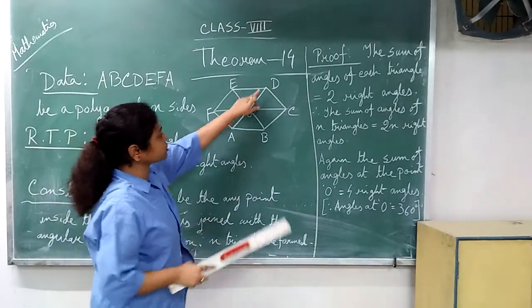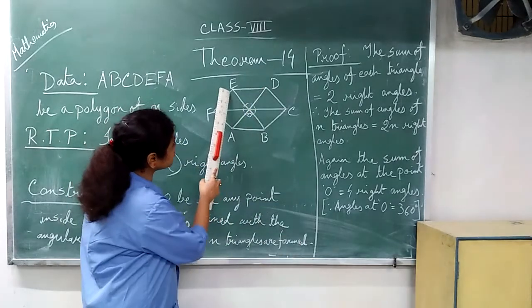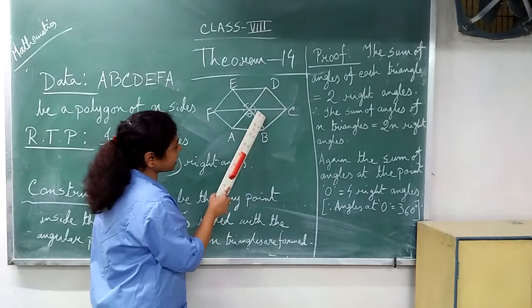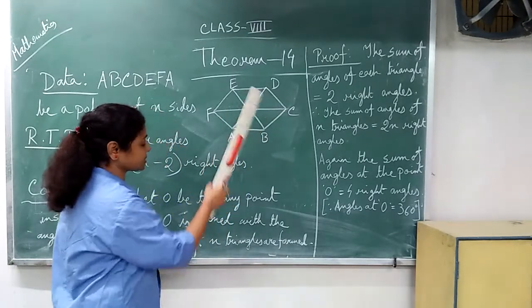See, you are joined from this to this and this to this. This is a triangle. One triangle forms. Again, another triangle is formed. Again, another triangle. These triangles are formed.